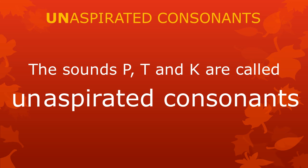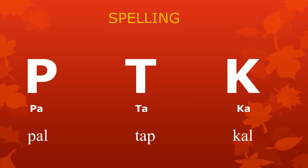The sounds p, t, and k are called unaspirated consonants because they are not pronounced with a little puff of air. Words with unaspirated consonants are pal, tap, and kal. These unaspirated consonants are spelled with only one letter: p as in pal, t as in tap, and k as in kal.